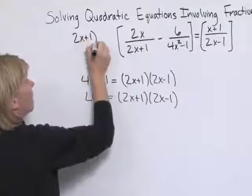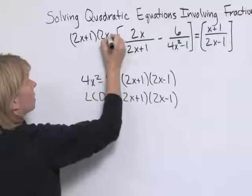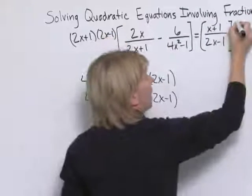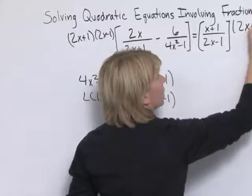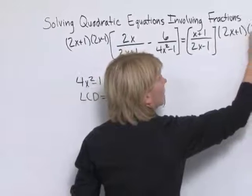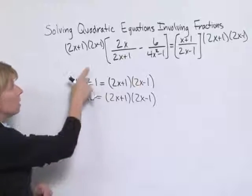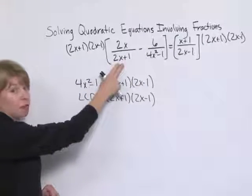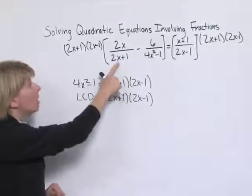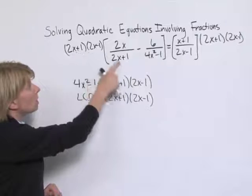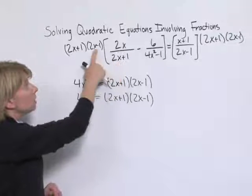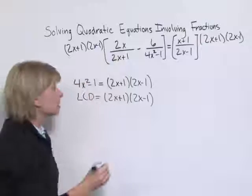So multiplying the left by the LCD. Taking the LCD times the first fraction, our 2x plus 1 divides out, leaving us with 2x minus 1 times 2x.